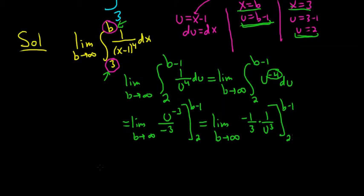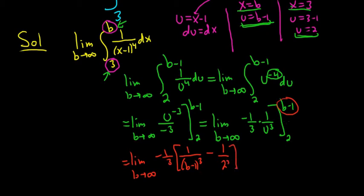All right. Now we're ready to plug in these numbers. So the first number you plug in is the top number. So we have limit b goes to infinity. So we have negative 1 third. I'm going to leave the negative 1 third on the outside. So it will be 1 over (b minus 1) cubed minus 1 over, and then we're plugging in 2. So 2 cubed, which is 8, but I'll leave it as 2 cubed. So again, first you plug in the b minus 1. We did that. Subtract. And then you plug in the 2.